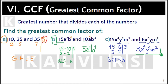Can the greatest common factor of a set of numbers be greater than any of the numbers? Since a factor is always smaller than or equal to the number, the greatest common factor cannot be greater than any of the numbers.